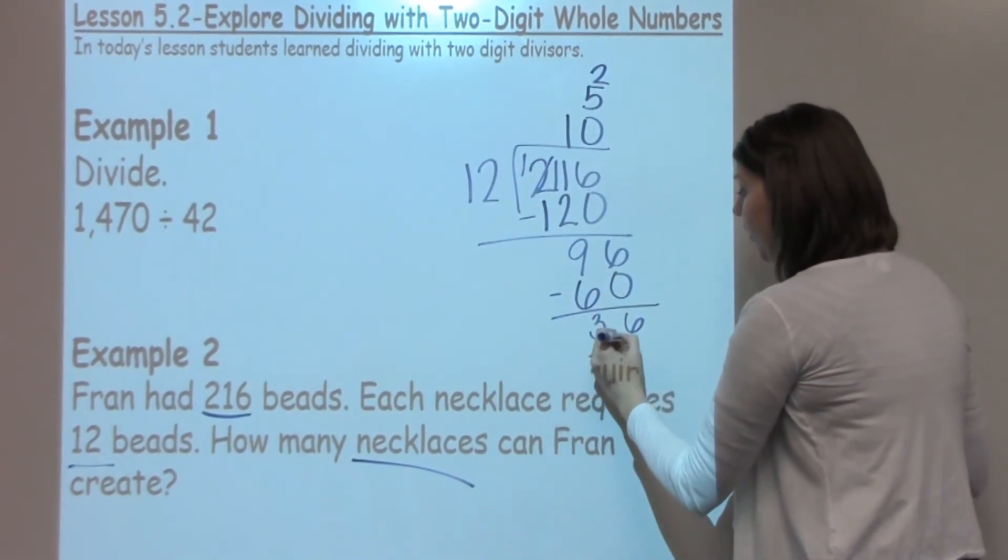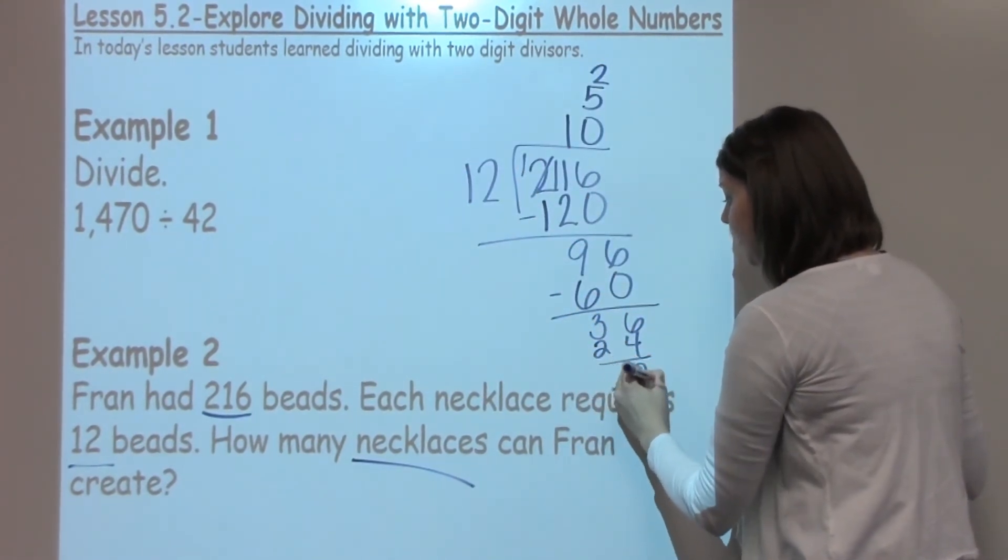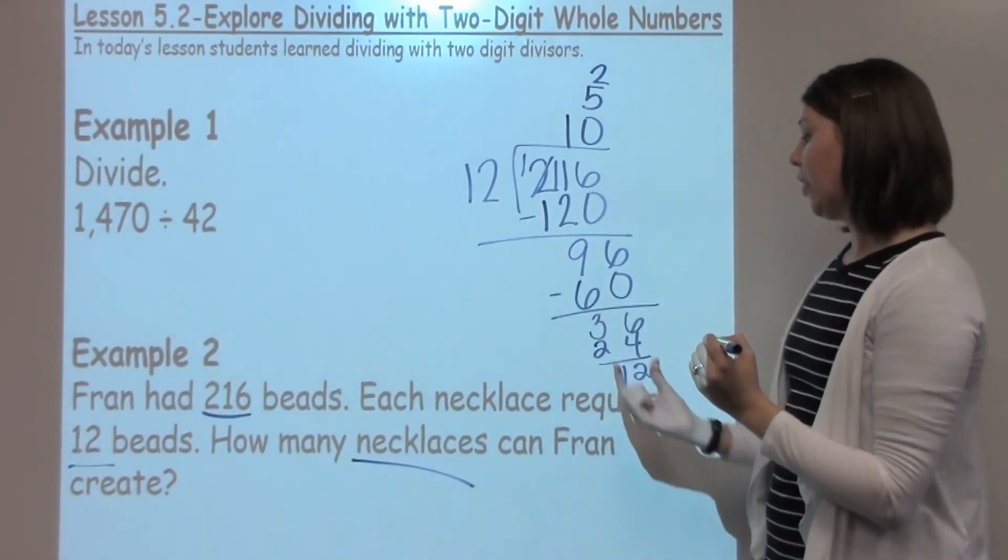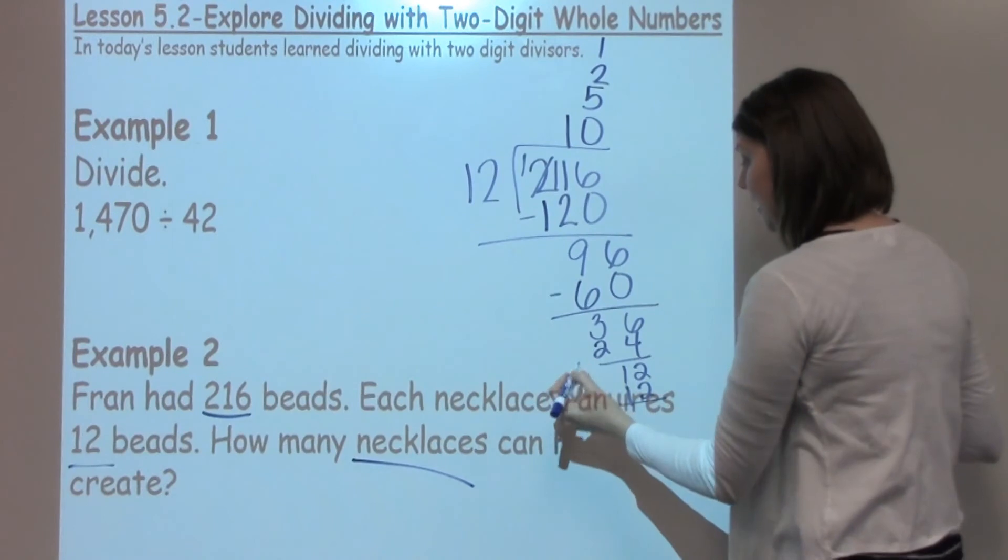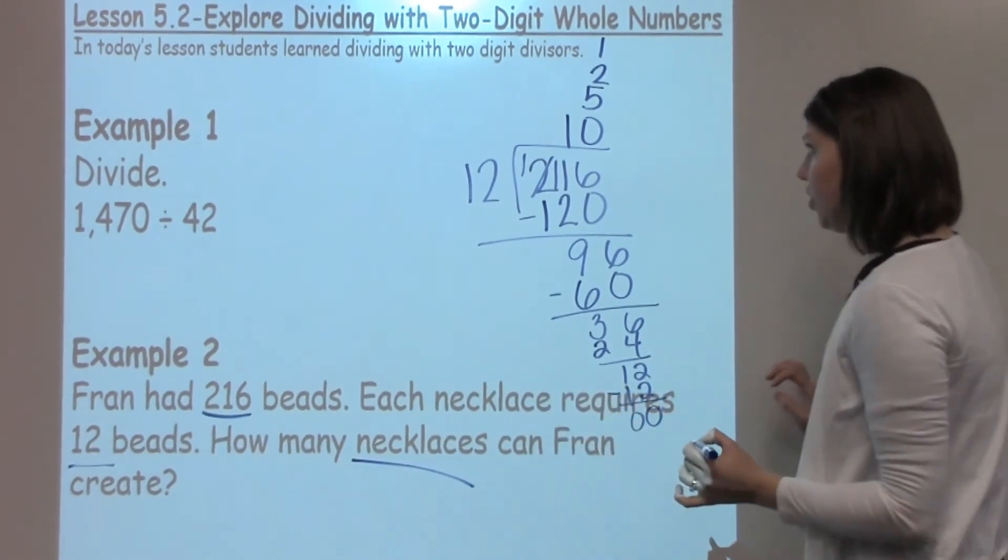2 times 12 is 24. And when I subtract, I get 12. 12 can go into 12 one time. 12 times 1 is 12, with nothing left over.